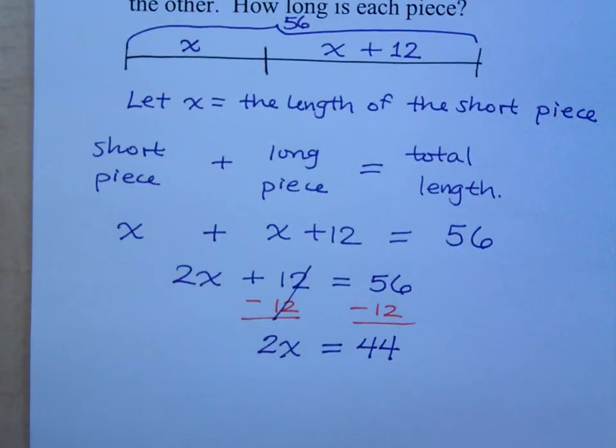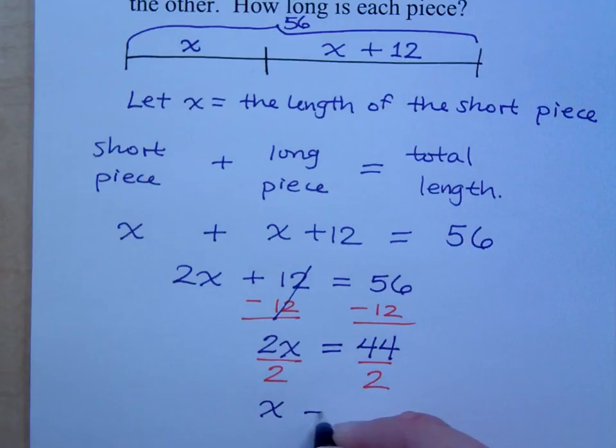Oh, we're almost there. I can feel it. I don't want 2x's. I want just 1x. So, I divide by 2 and I find out that x is equal to what? x is 22.